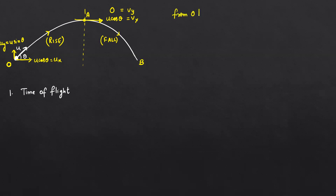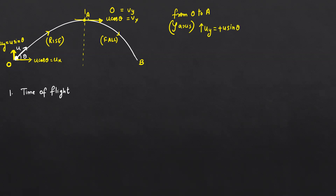Writing equations from O to A along the y-axis: the initial velocity along y is u sinθ (upward, taken as positive), the final velocity at the highest point along y is zero, and the acceleration along y is −g (downward).